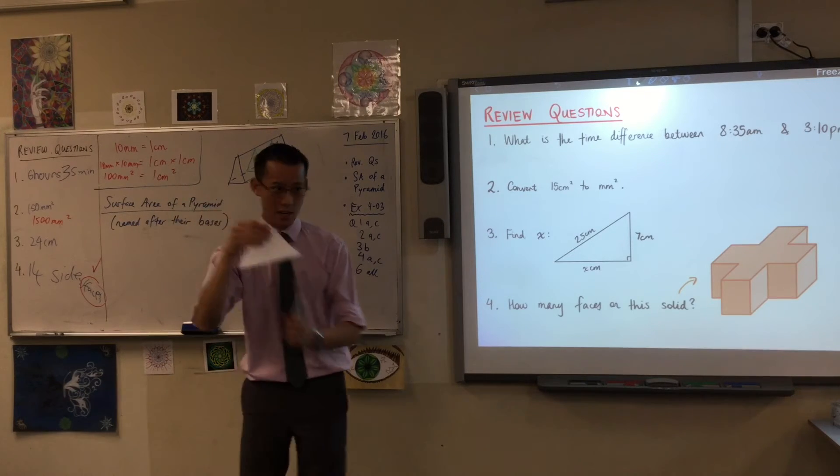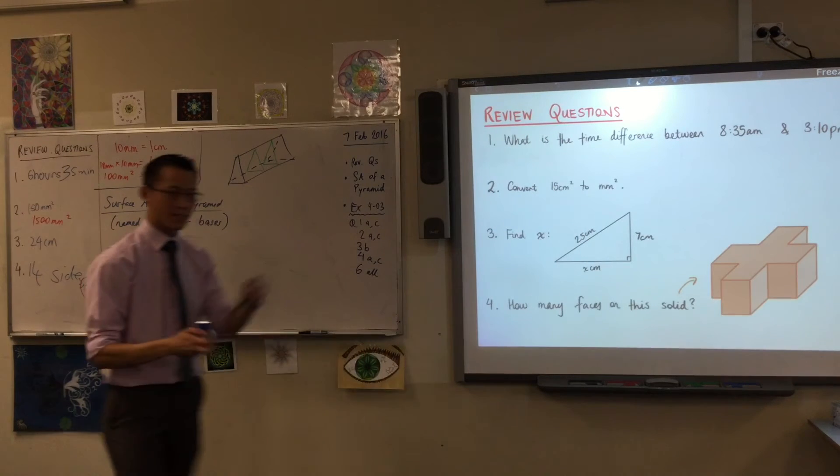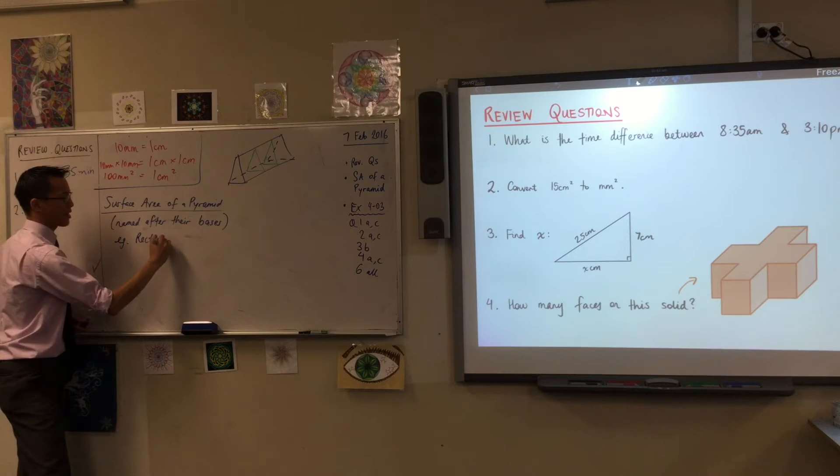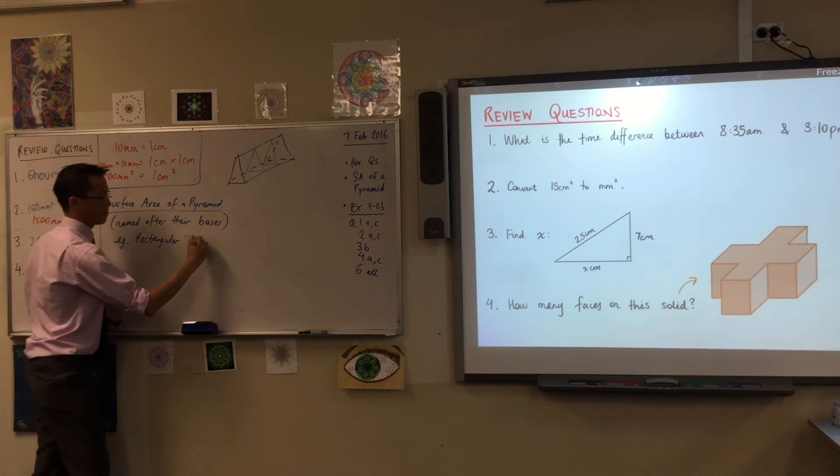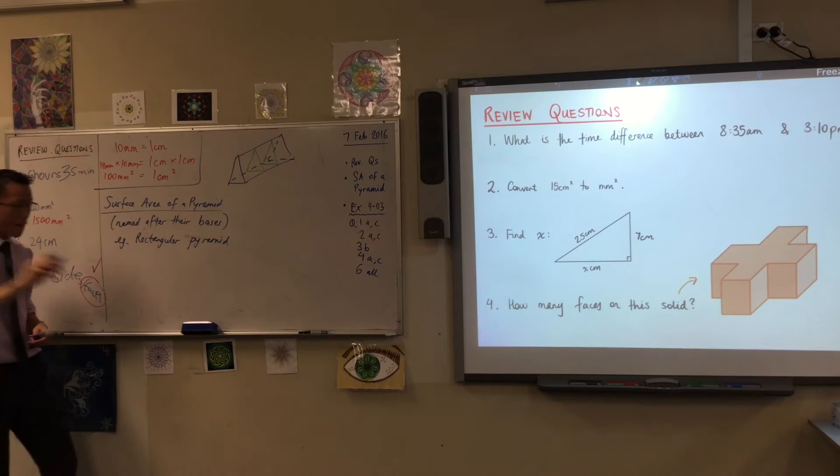So, we're going to work out the surface area of this thing. The question is, how many sides does this, and we'll do this as an example. How many faces, I should say, does this rectangular pyramid have? It has five faces, right?